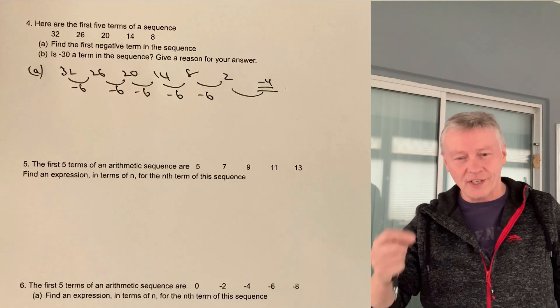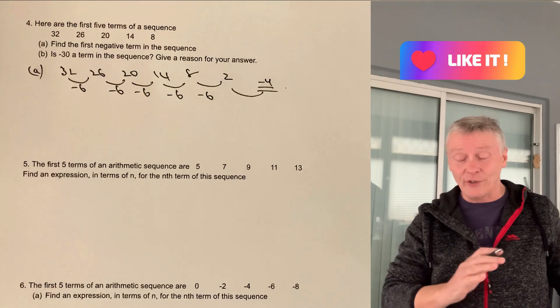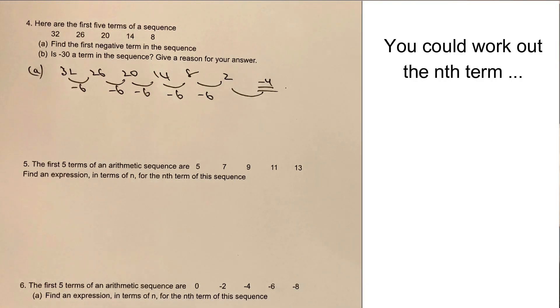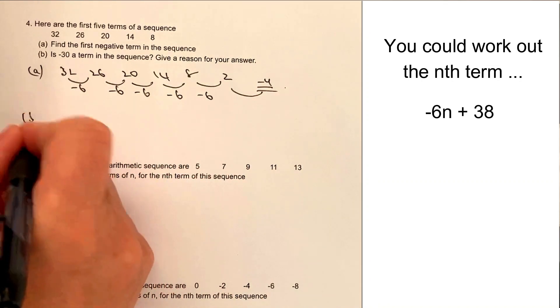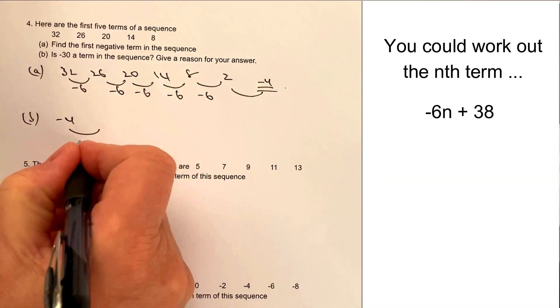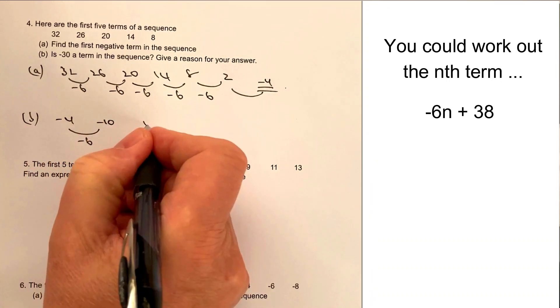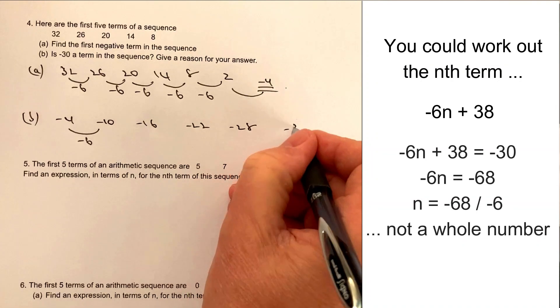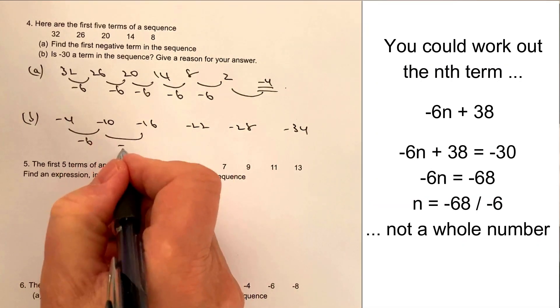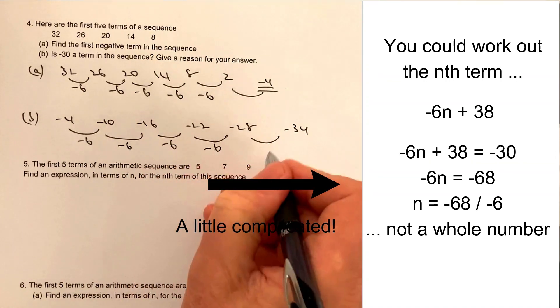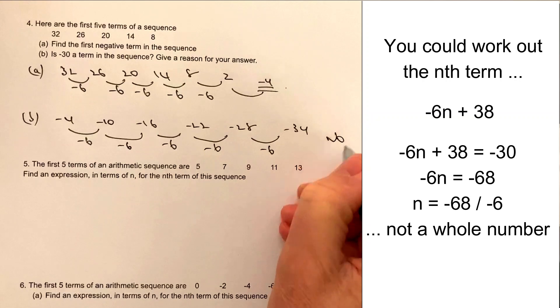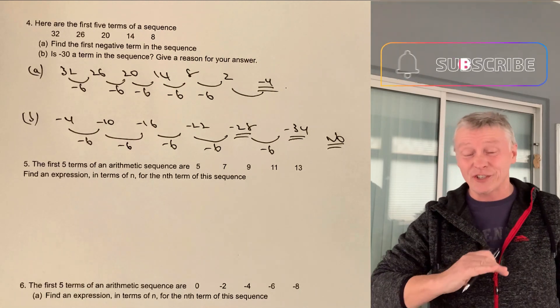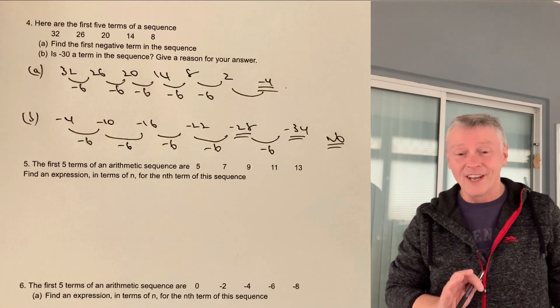And then we've got to find out whether minus 30 is a term in the sequence. Well, probably the easiest thing because we've already started is just carry on and see if we get to minus 30. So from minus 4, we're going to have minus 4, and then I'm going to take another 6 away. It's going to be minus 10, and then minus 16, and then minus 22, minus 28, and minus 34. So the answer then is that if we're reducing the sequence by minus 6 each time, the answer is no. It actually skips between minus 28 and minus 34. And sometimes with these sorts of questions, you need to just show the sequence.